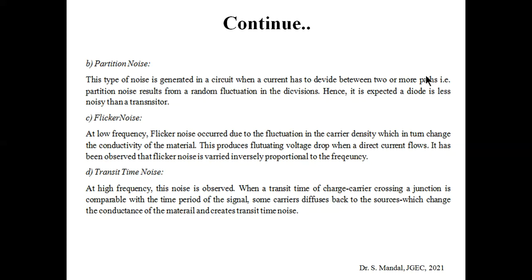Partition noise occurs in circuits where current divides between two or more paths, such as at junctions. In a diode there is one junction, and in a transistor there are two junctions. Partition noise results from random fluctuation in this division or partition. As the number of partitions increases, the noise increases. Therefore, a diode is less noisy than a transistor.